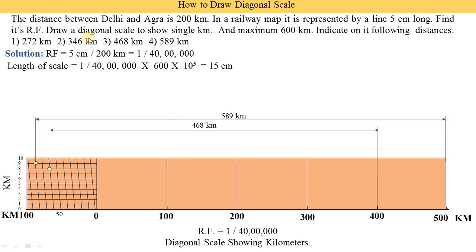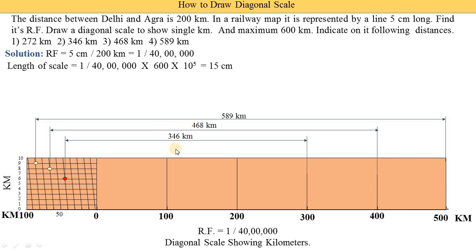Next, we indicate 346 kilometers. We locate the division for 300 kilometers. The remaining 46 kilometers — we find the line for 40 on the diagonal scale, then move up 6 divisions on the vertical scale. We get the point, draw a vertical line, and indicate 346 kilometers.